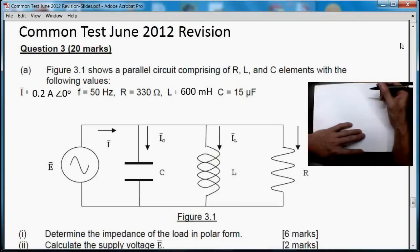Hi, welcome once again. This time let us look at the Common Test June 2012 paper as a revision. We'll look at a long question, question 3. Now this question reads as follows: Figure 3.1 shows a parallel circuit comprising of R, L, and C elements with the following values.